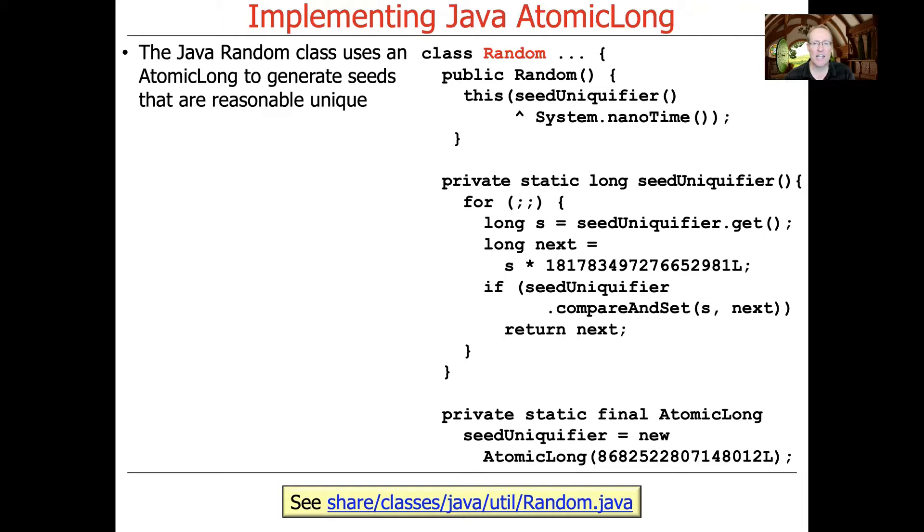And internally, it uses an AtomicLong to generate seed values, if you need to seed the random number generator, that will end up generating relatively unique results. We're trying to make the random number generator work as randomly as random number generators can work, if that makes any sense. And you can see all the source code here at the link at the bottom of the slide.